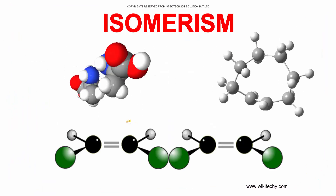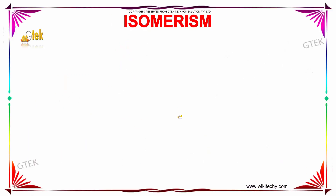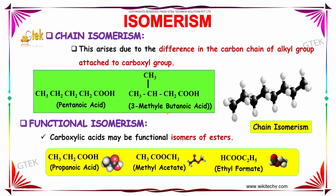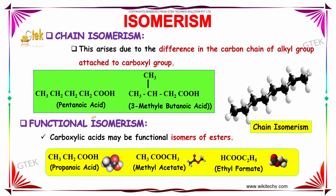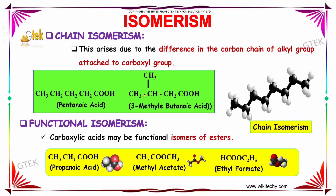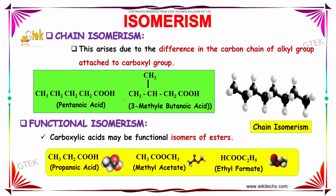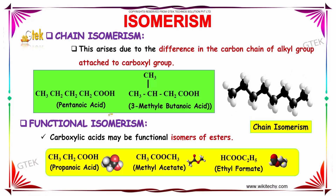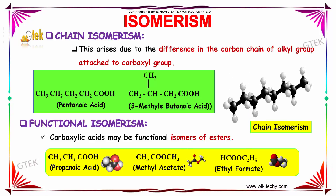Isomerism. Firstly, we will discuss about the chain isomerism present in carboxylic acids. This arises due to the difference in the carbon chain of the alkyl group attached to the carboxyl group. The functional isomerism — carboxylic acids may be functional isomers of esters. For example, propanoic acid.